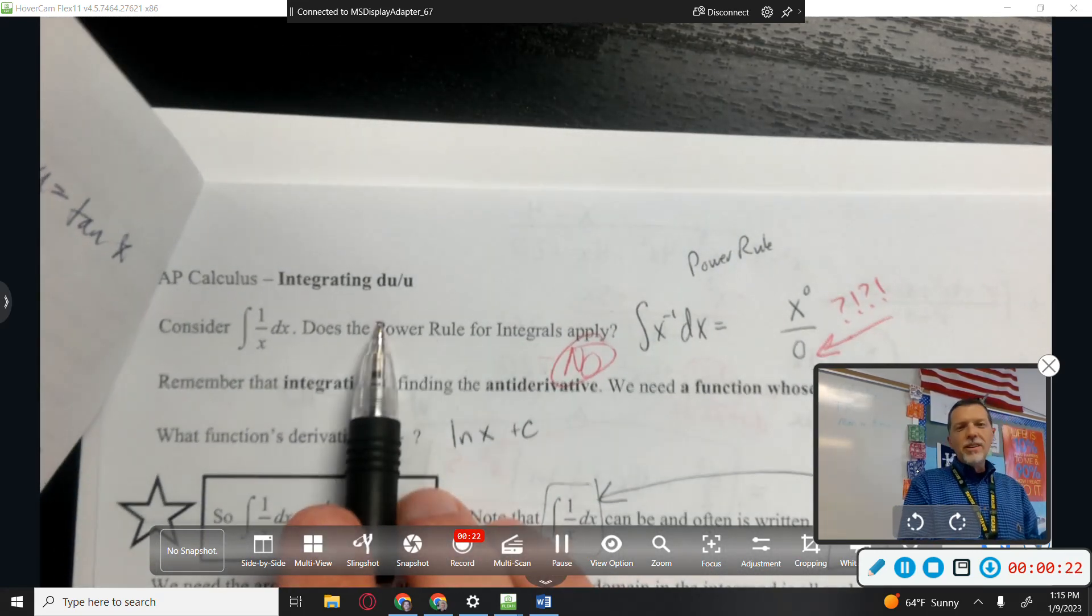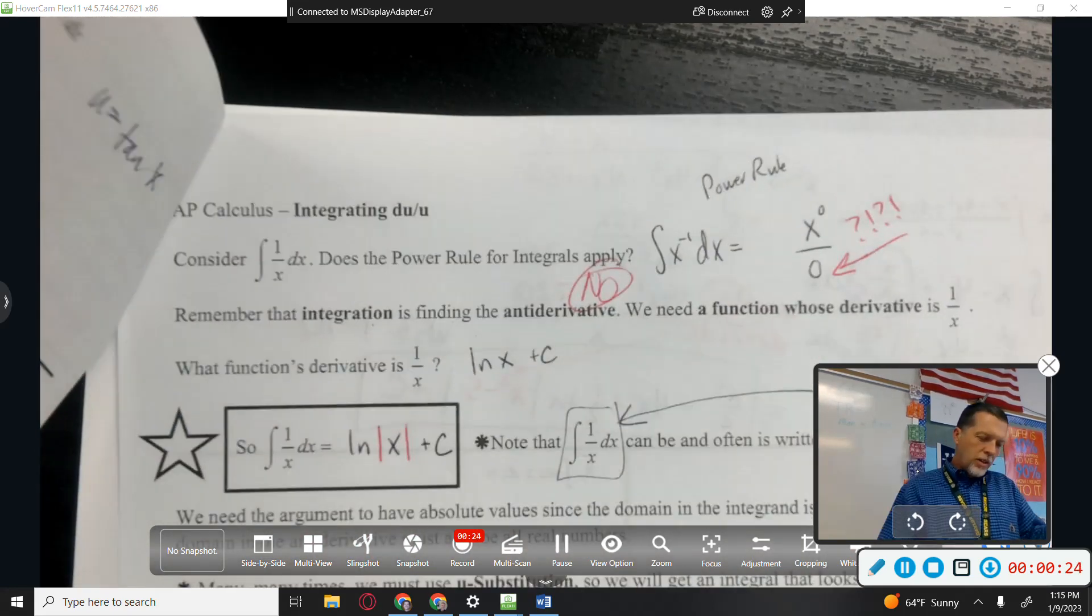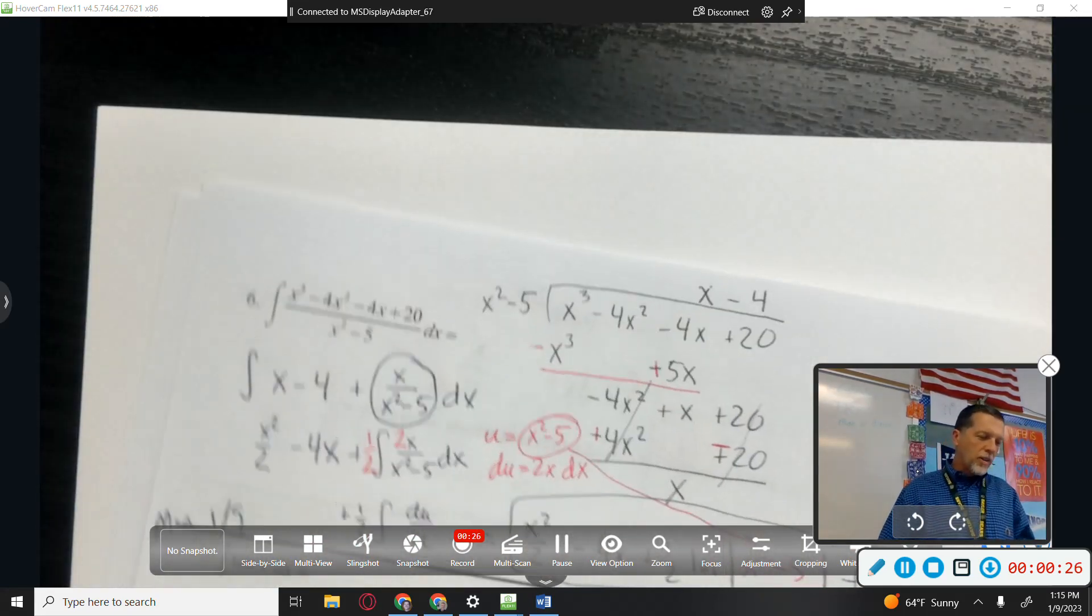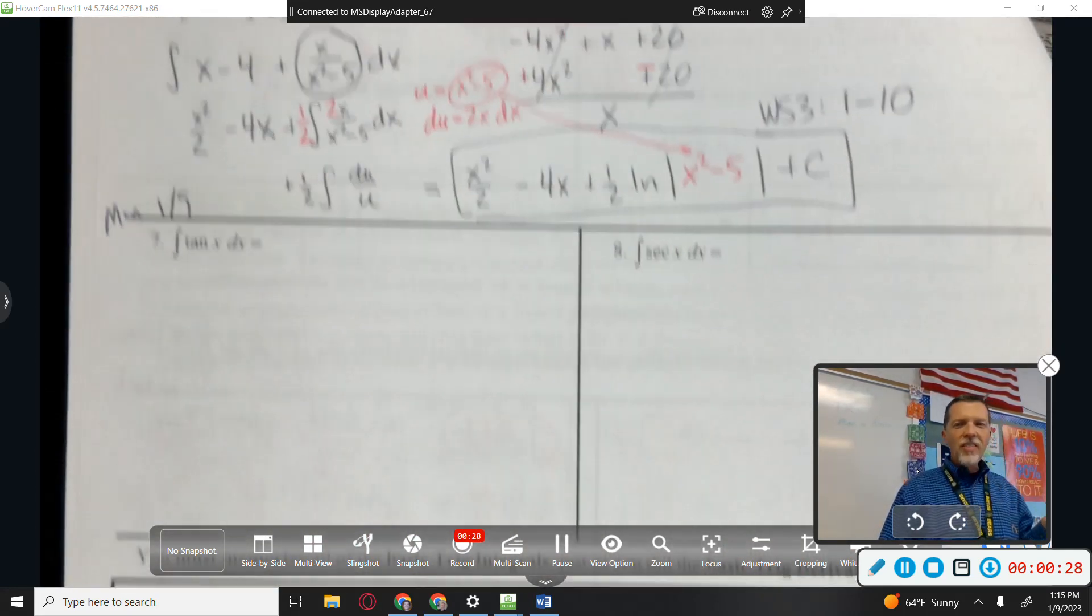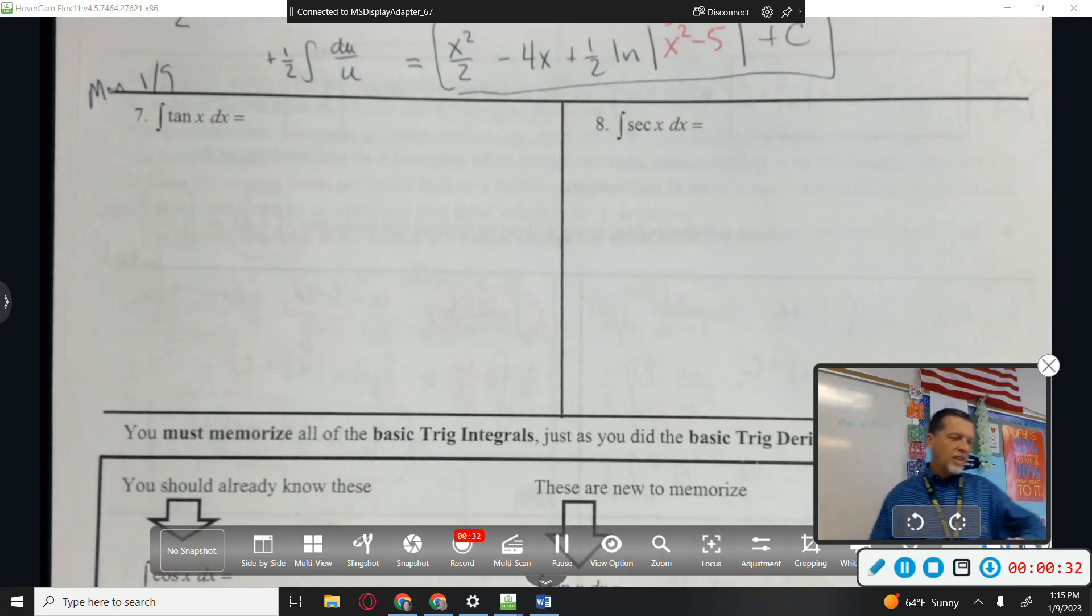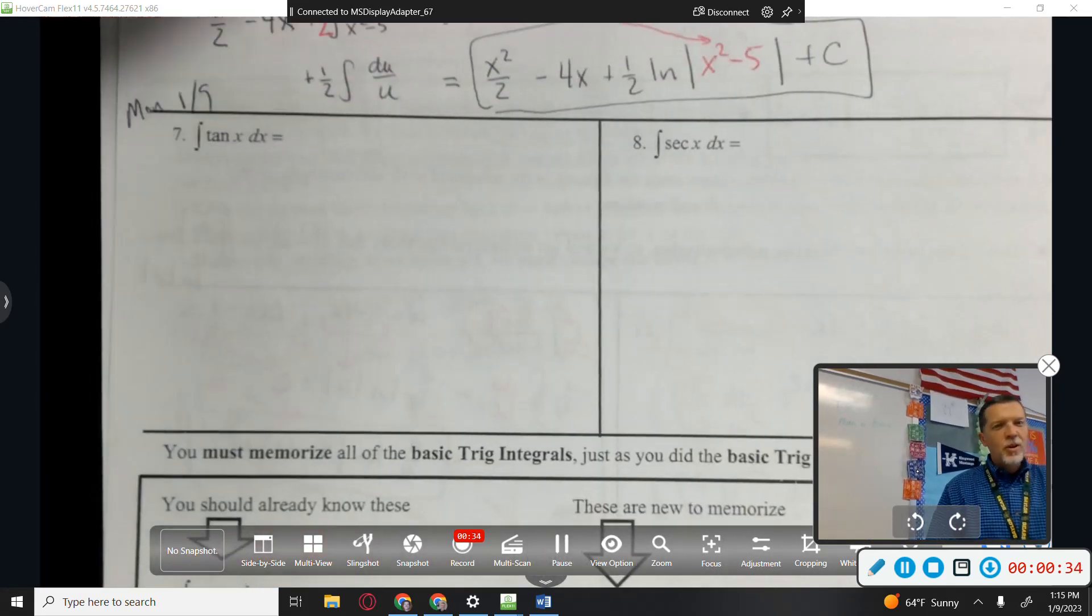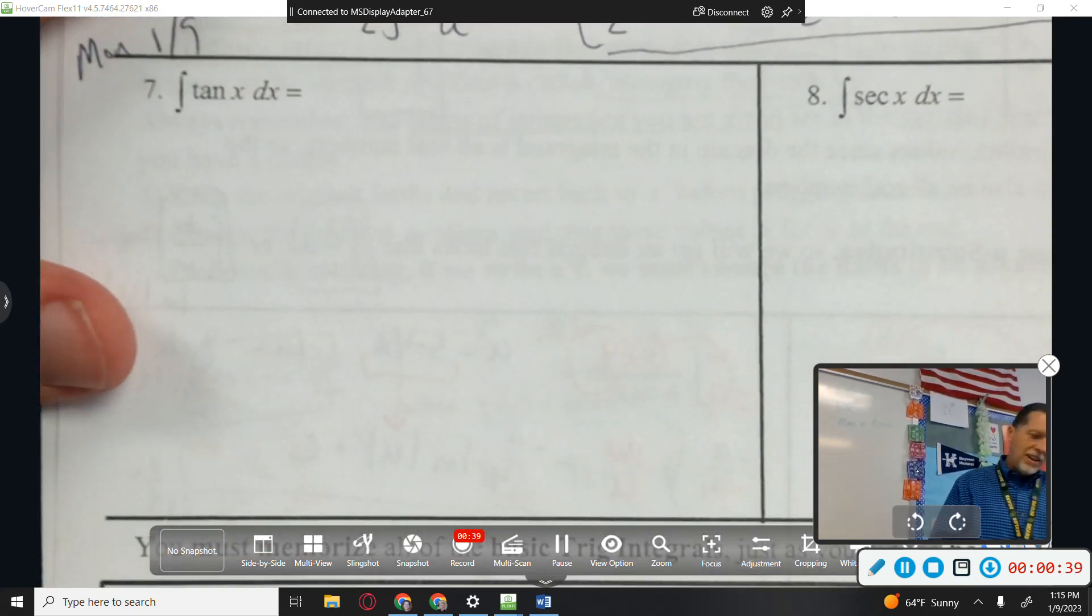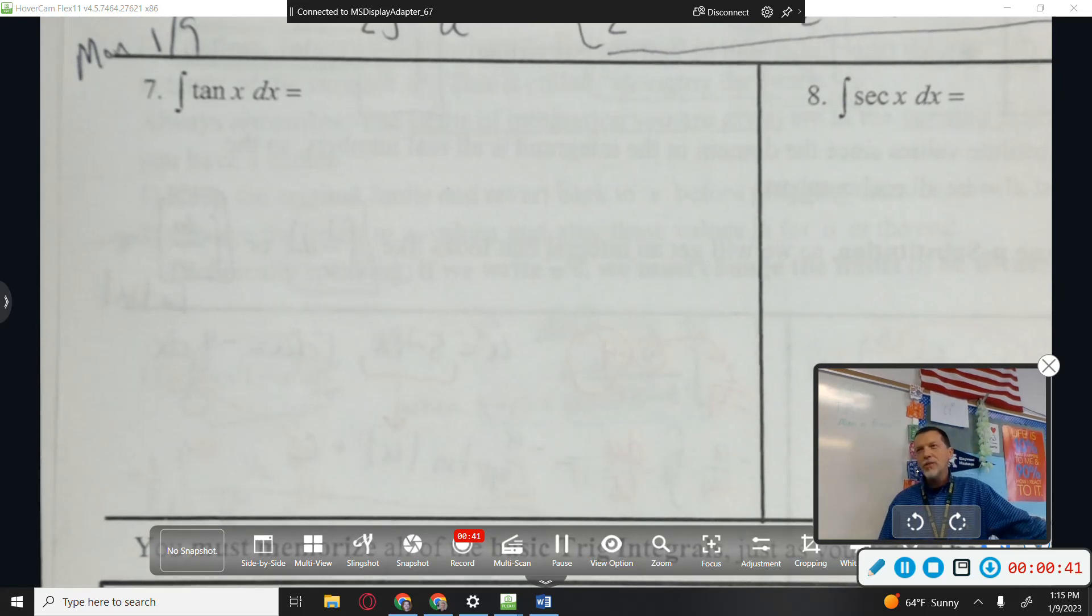Friday we did integrals of DU over U. Did a whole bunch of those. Just did some practice problems with those. And there's 7 and 8, and it's like, well, that doesn't look like DU over U. Exactly. Let's just get it. Why is this in this section? And why did Mr. Wolf save a whole day for two problems?